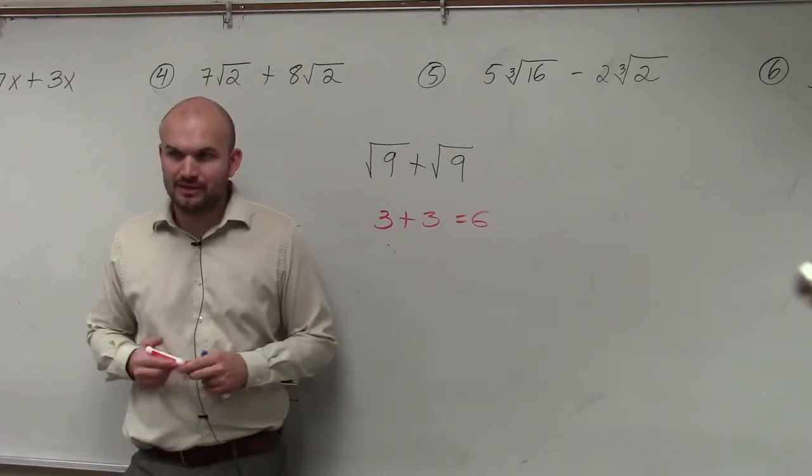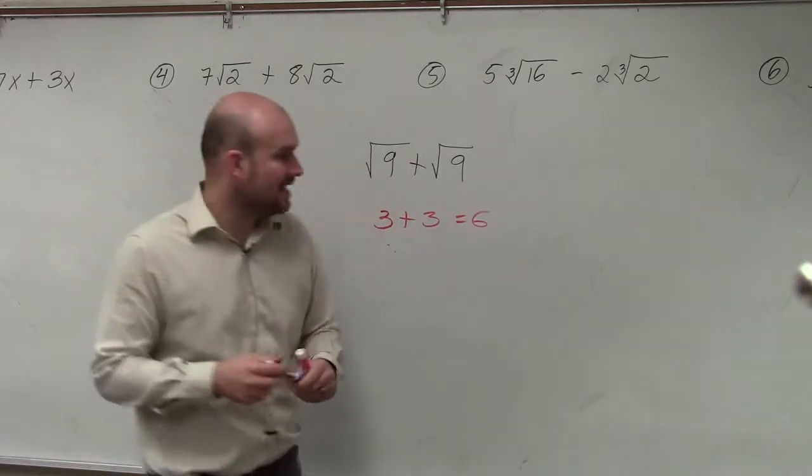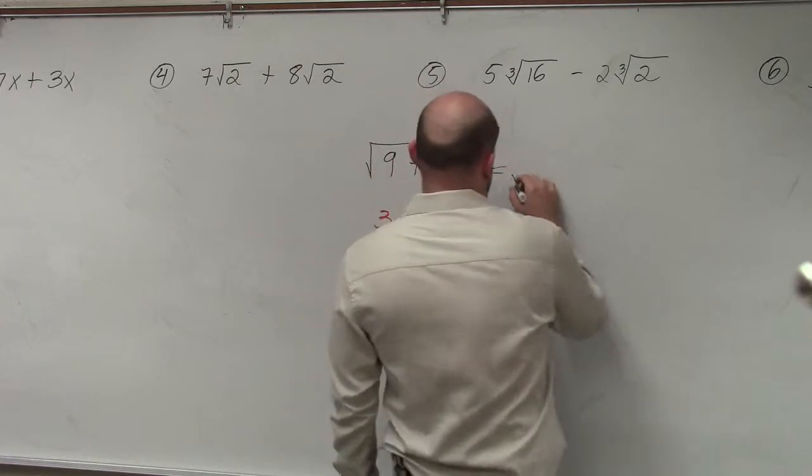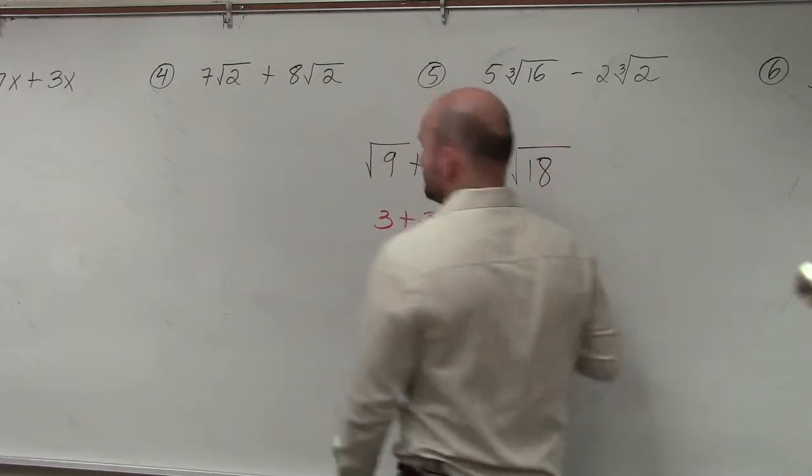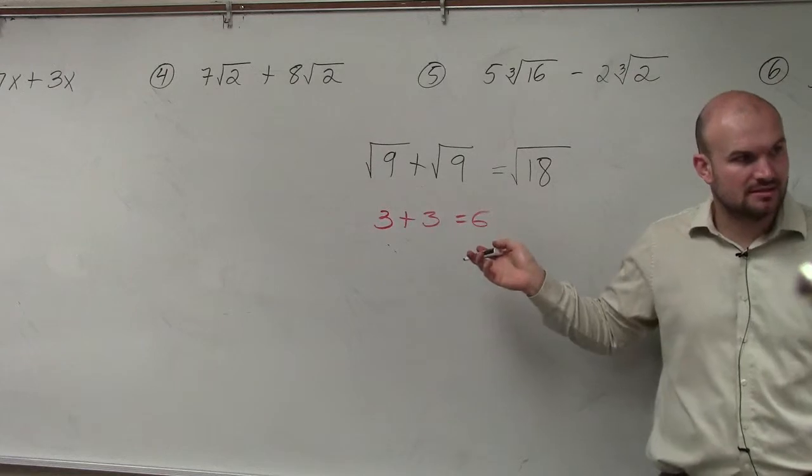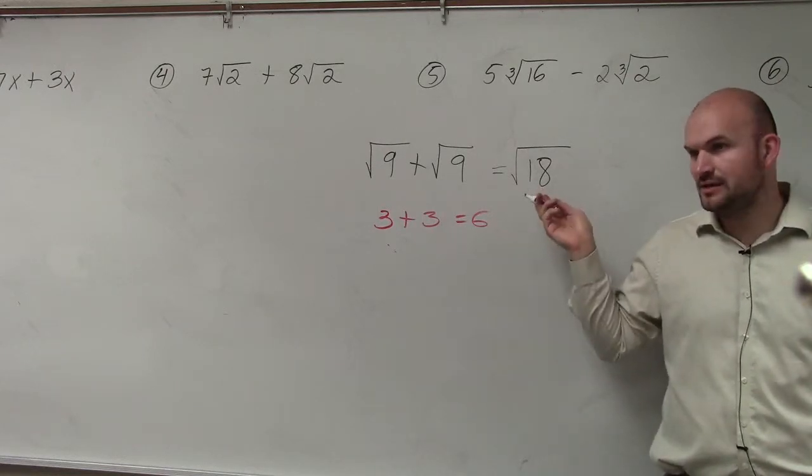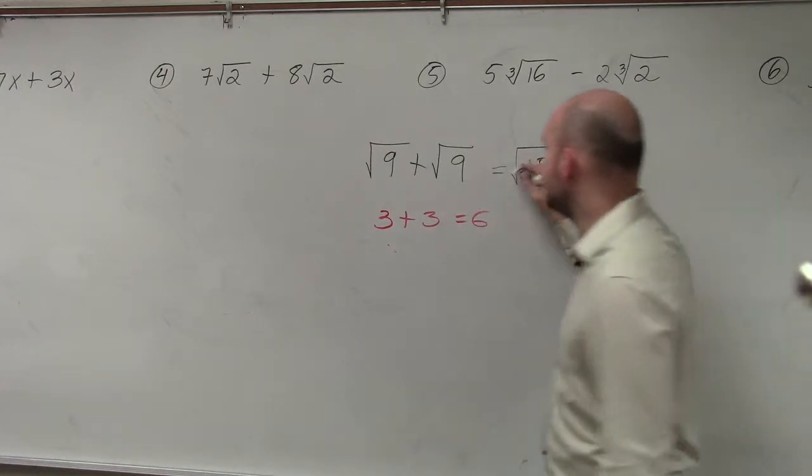What I'm seeing a lot of students doing is they're saying square root of 9 plus square root of 9, that equals the square root of 18. Well, is the square root of 18 equal to 6? Does 6 times 6 give you 18? No. So we have an issue here then.